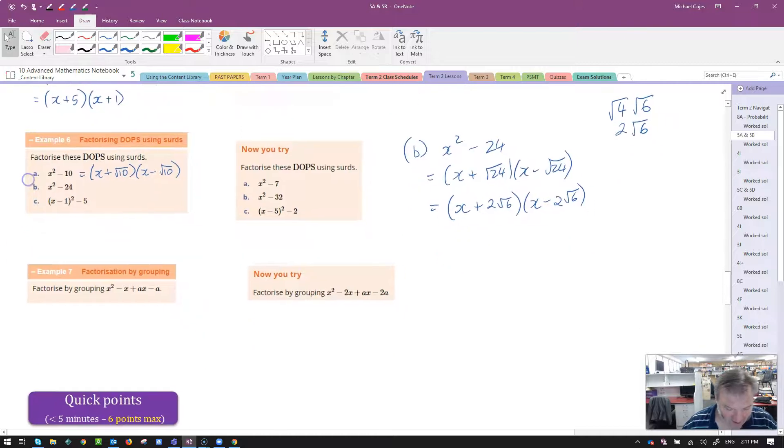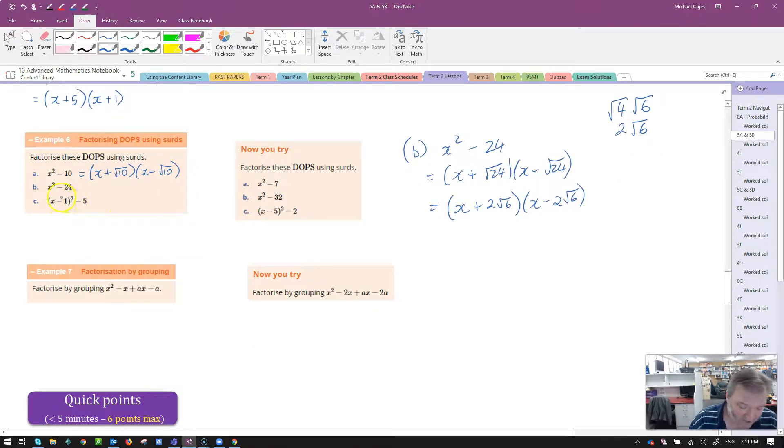Lucky last one here. X minus 1 all squared minus 5. So x minus 1 is my first term. Root 5 would be the second one. So I'm going to have x minus 1 plus root 5 times x minus 1 minus root 5.